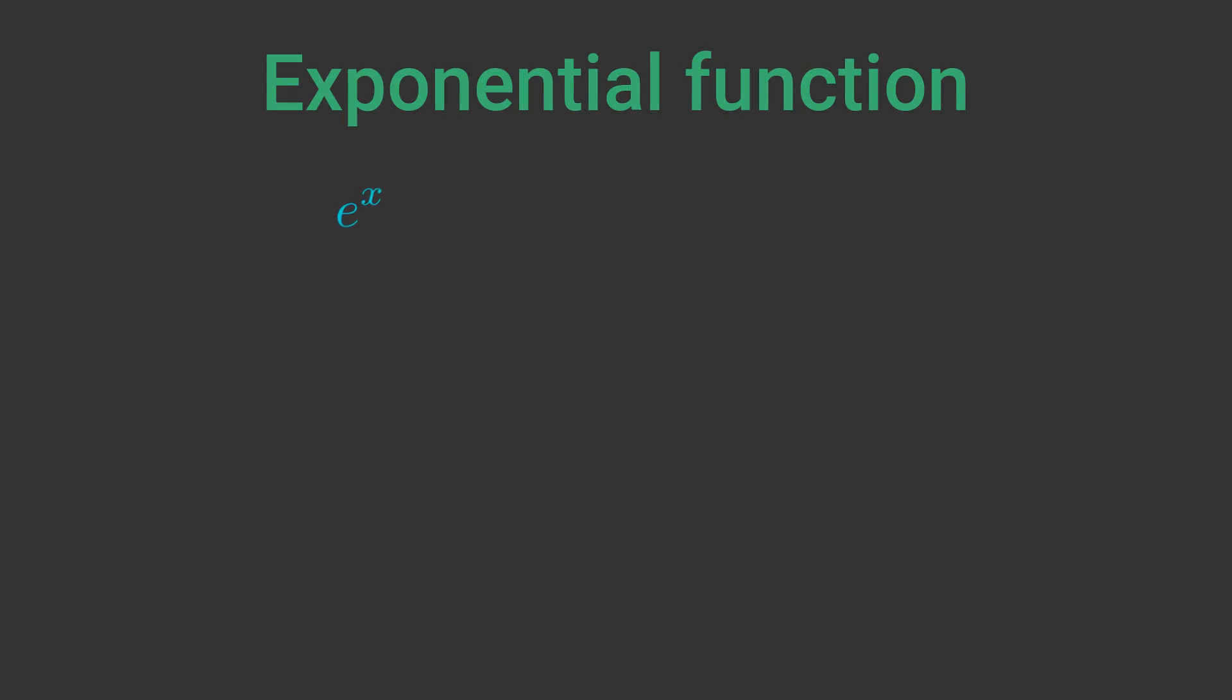The exponential function is e to the power x where e is Euler's number. The useful thing about the exponential function is that it can be expressed as a Maclaurin expansion like this. This series allows us to calculate an approximate value of e to the x for any value of x.